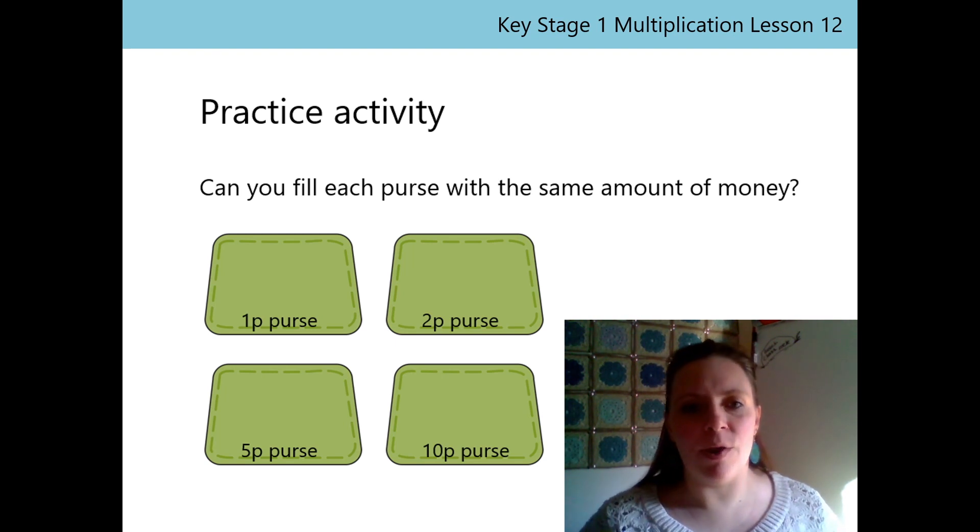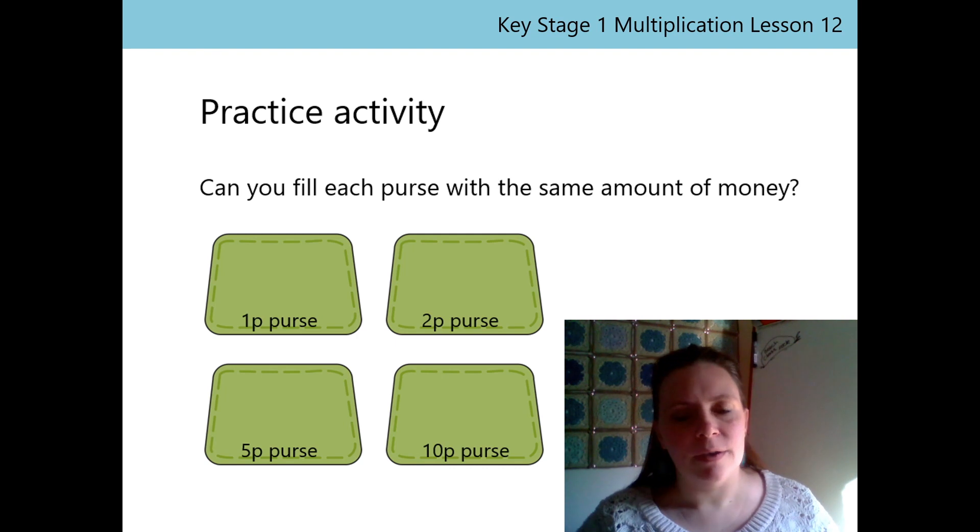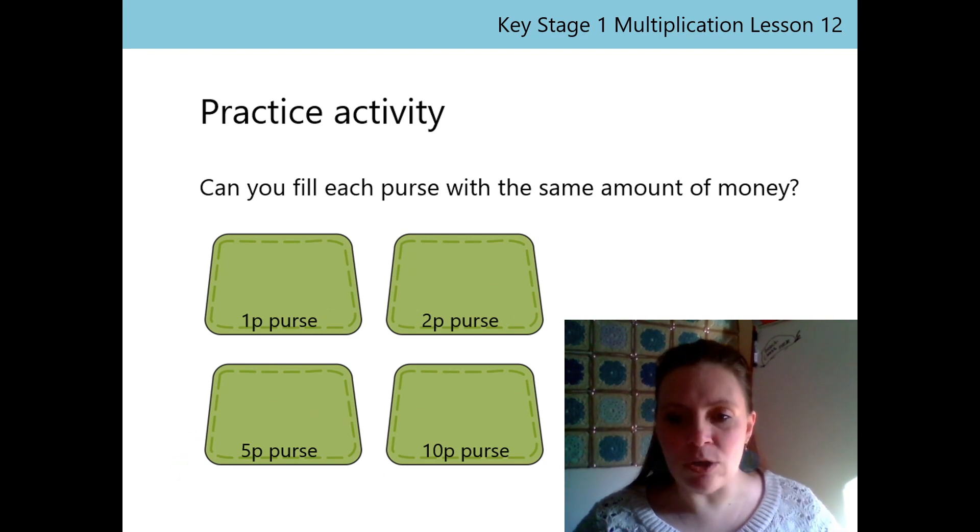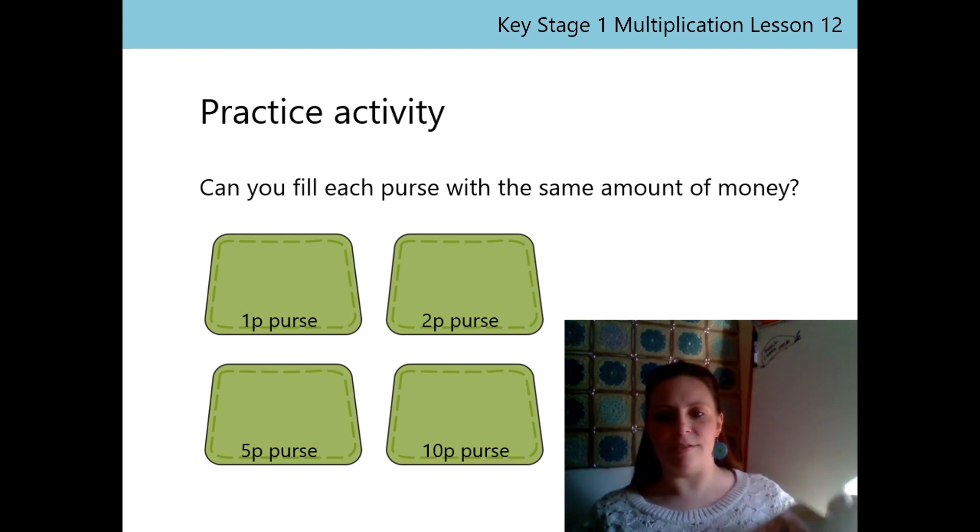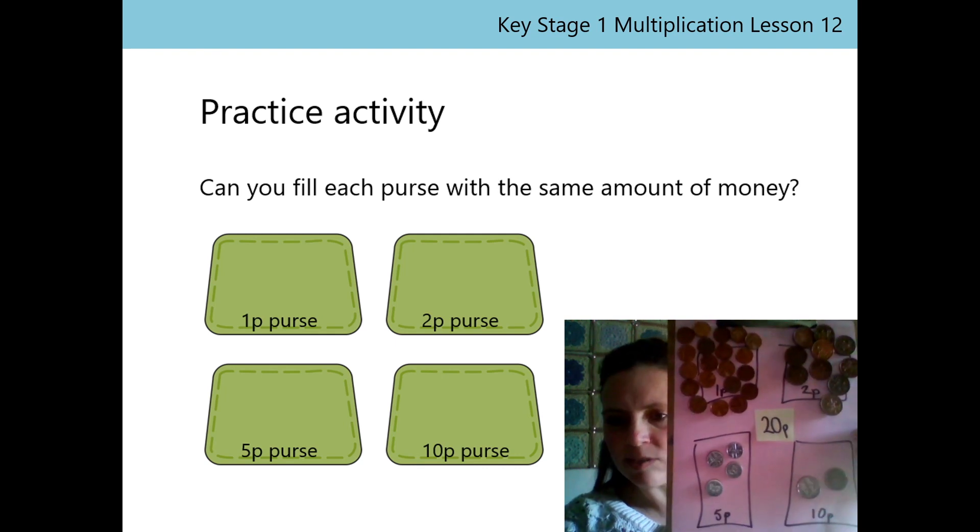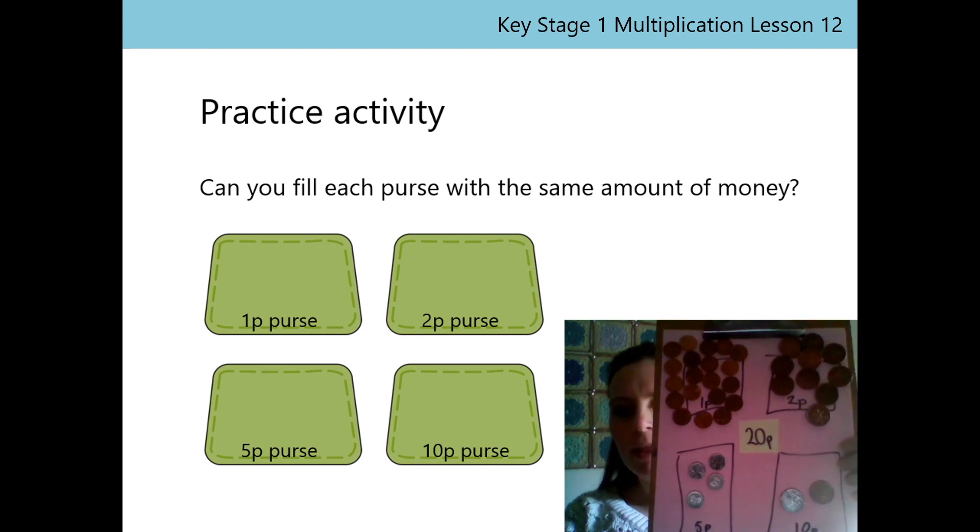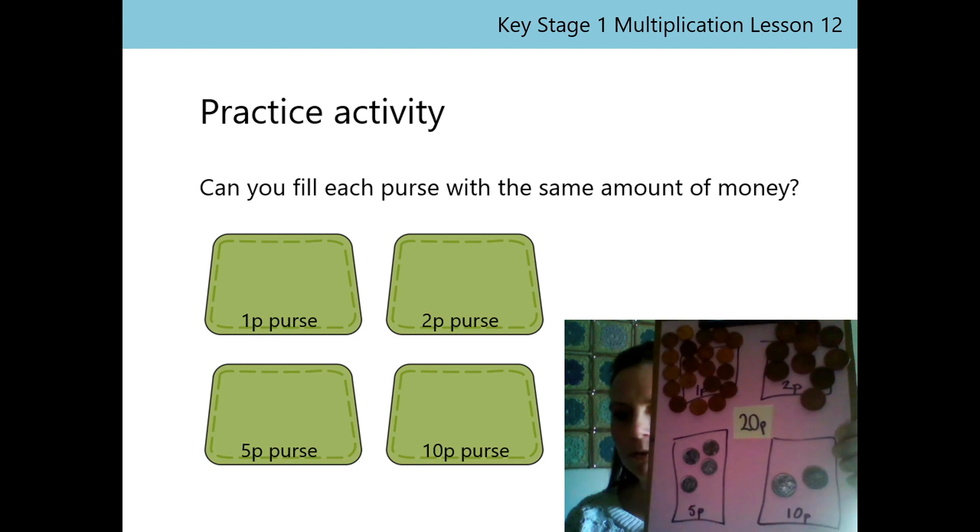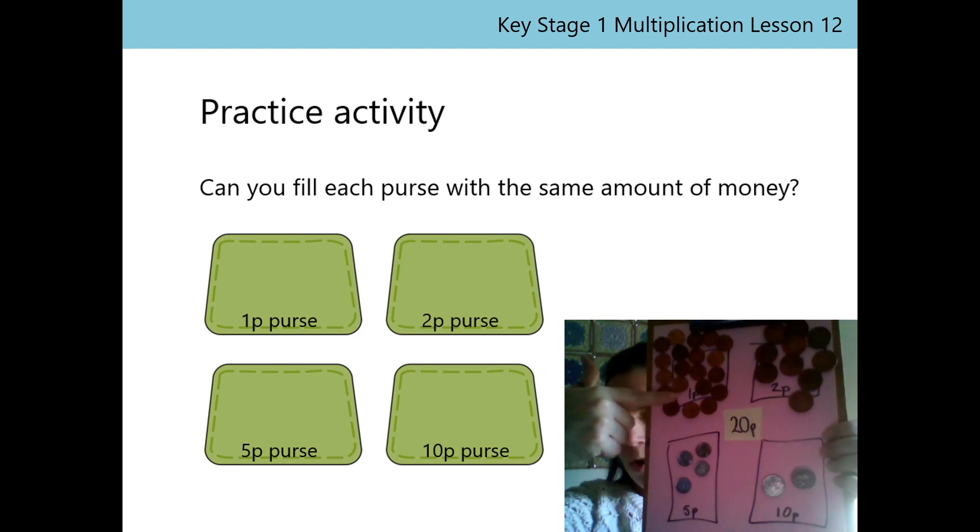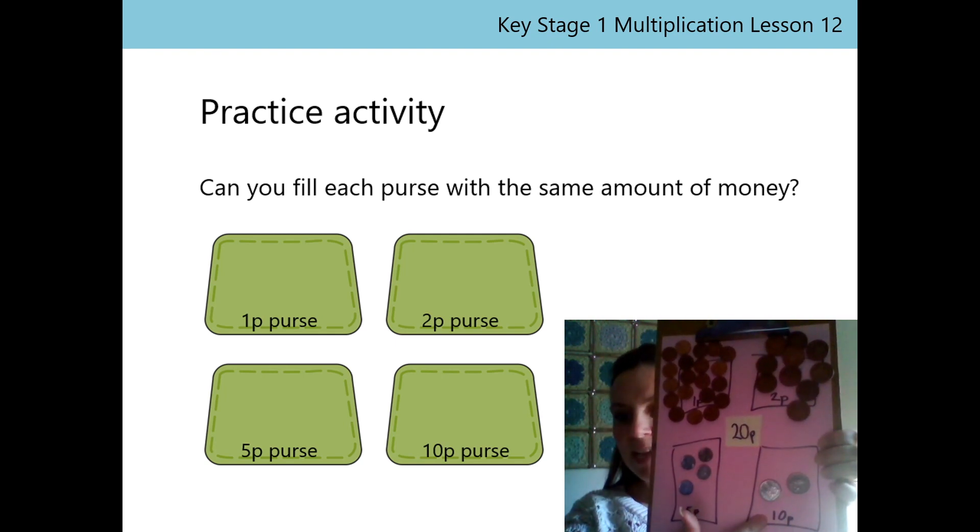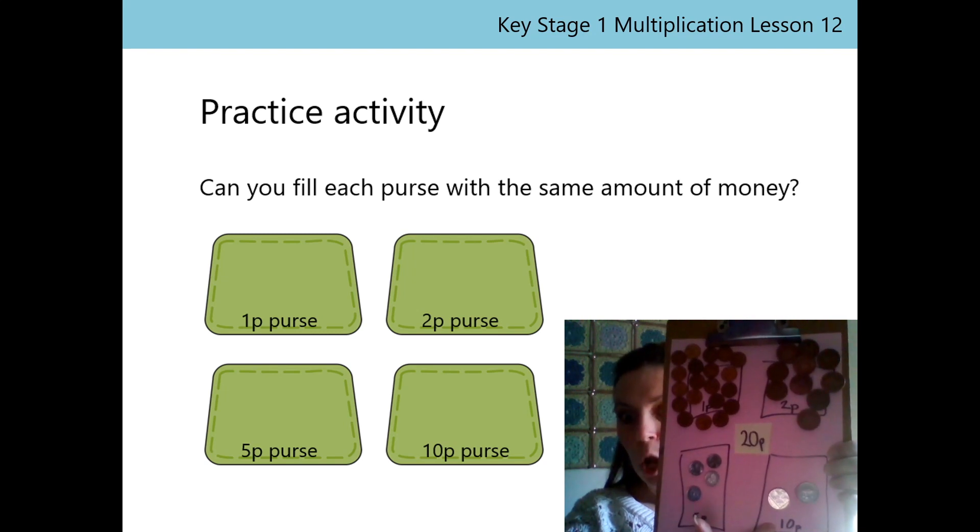That's right. It's this one on the screen where I asked you to fill purses with the same amount of money, but a different type of coin in each purse. I did lots of different options, but here's one of my favorites. I made 20p in each purse. Did you notice the same thing I did? That the lower the values of the coins, the more of them I need to make a total value. Look how many 1p coins I needed to make 20p, compared to how many 10p coins I needed.